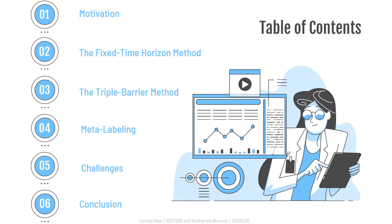We will start by a brief introduction to the subject, followed by an explanation of the different methods of labeling, such as the fixed time horizon method and the triple barrier method. Then we'll move on to further improve the model by adding size and meta-labeling. Afterwards, we'll talk about the main difficulties of meta-labeling and finish with an explanation on how to use meta-labeling to avoid those.